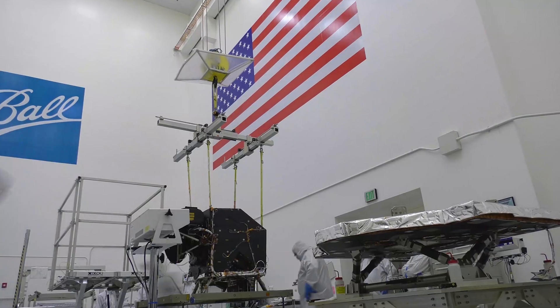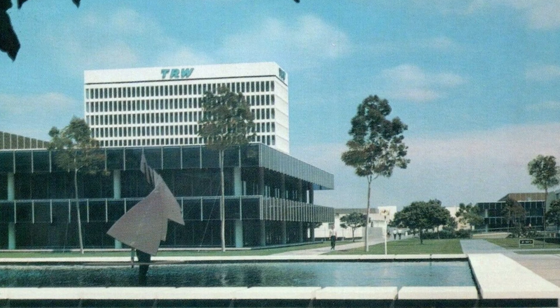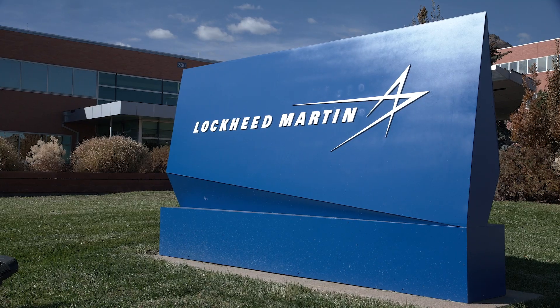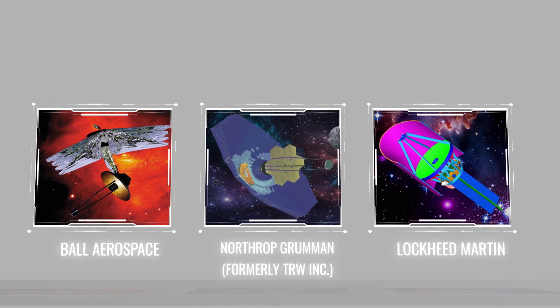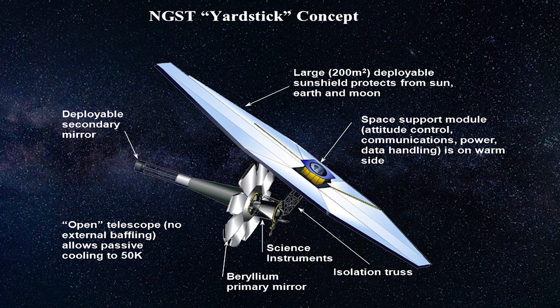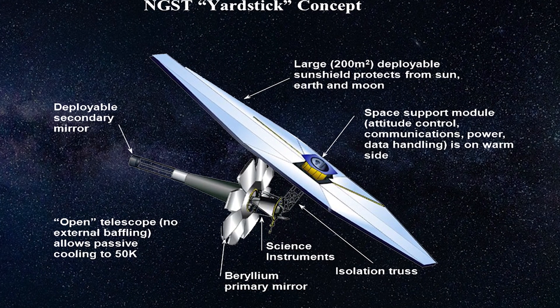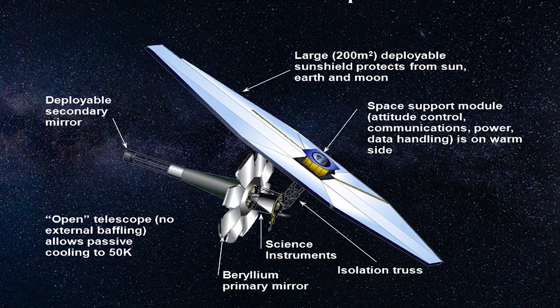We announced that study money would be available and interested parties could apply. Ball Aerospace, TRW, and Lockheed Martin were all industry partners who said they had concepts that could work. The government also had to have its own model, which we called the Yardstick Model, to make us smart buyers — because eventually a contract would go out for industry to make the telescope, and you had to know enough about your own designs to judge what others were proposing.